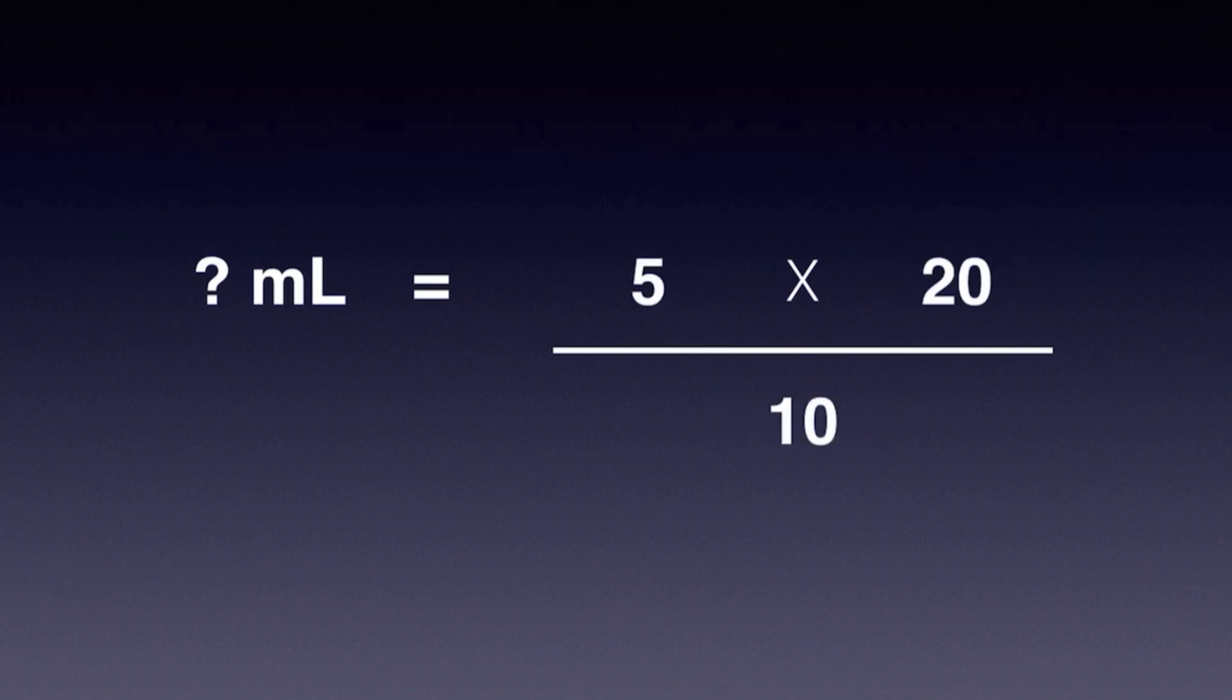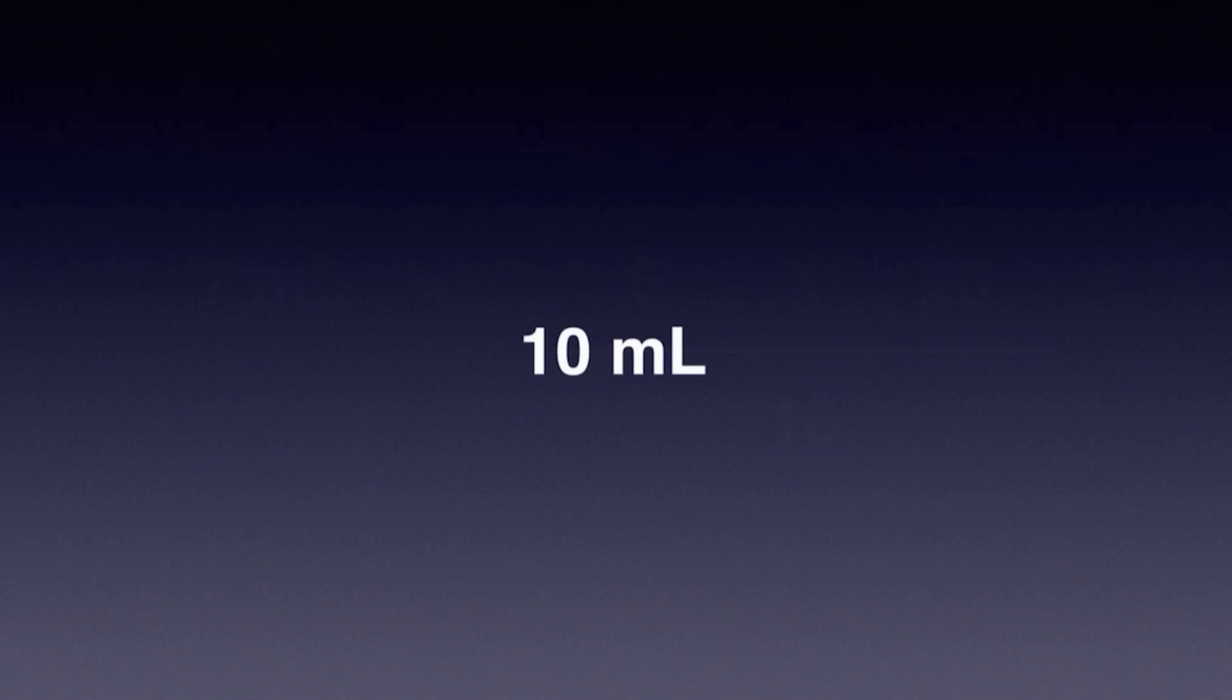So when I do the math, 5 times 20 divided by 10 is simply 10 milliliters. And that's all cross multiplication is. We're going to give you a bunch of problems to practice with, and good luck.